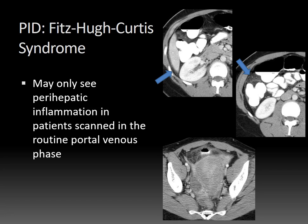On the typical routine portal venous phase used for most ER and routine CT scans of the abdomen and pelvis, you'll usually just see the perihepatic inflammation and won't see the hyperemia. You may pick it up on a CT angiogram for pulmonary embolism evaluation or other early aortic phase studies.